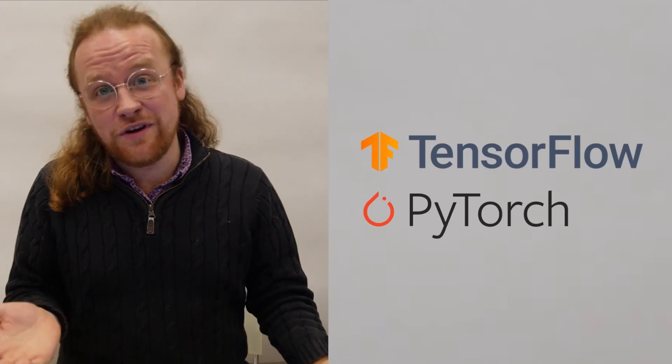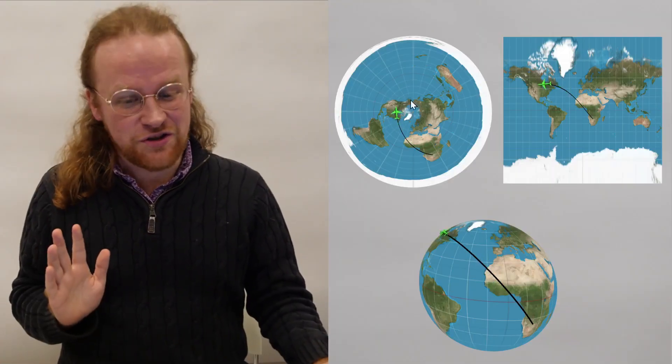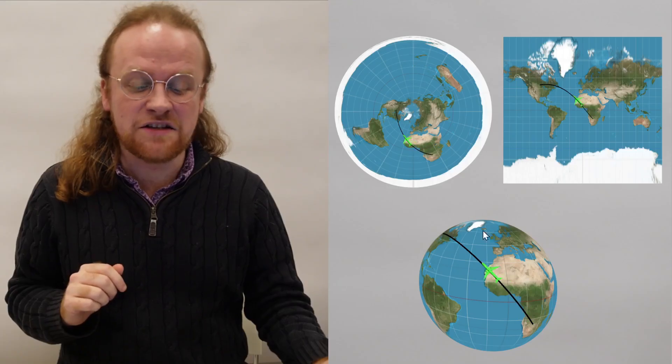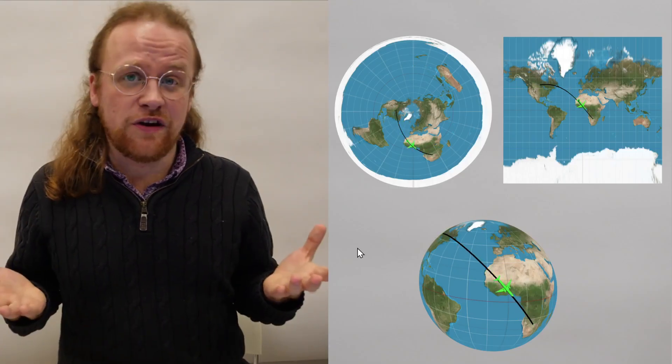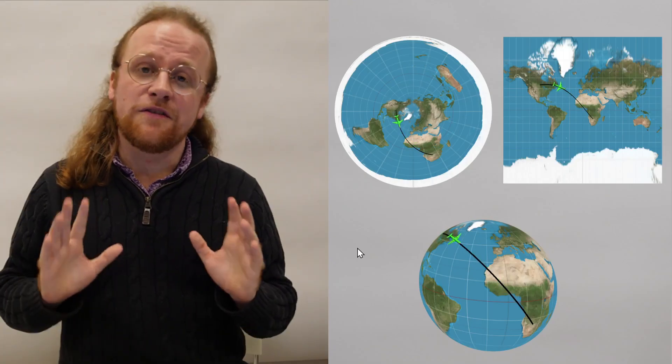TensorFlow and PyTorch, for example, don't use it. They're doing the equivalent of drawing a straight line on one of these maps and expecting it to be a shortest path on the globe. But that's unfortunate because these AIs could be being trained faster and more accurately.